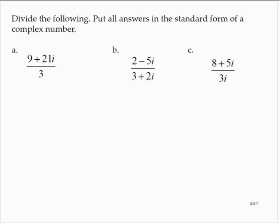Divide the following. Put all answers in the standard form of a complex number. Now the first exercise gives us 9 plus 21i over 3. Remember that the standard form of the complex number, when we talk about the standard form, that's of the form a plus bi.